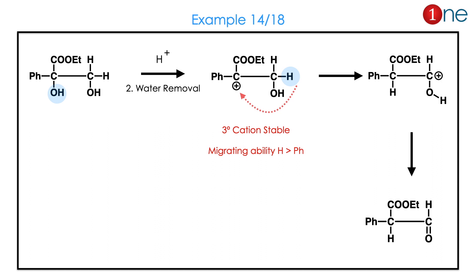Let us look at the next question. You have an asymmetric alcohol — which one gets protonated? Protonation happens to form the stable cation. Only the acetate-side cation forms, hydrogen migrates, and the cation forms near the alcohol. It will form the ketone. Always remember: the stable cation is the intermediate.